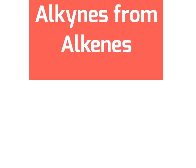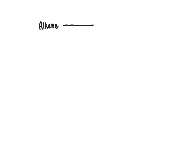Let's look at how to convert alkenes into alkyne functional groups. We'll start with any alkene molecule and do two reactions in a row. The first reaction is an addition reaction where we add across the carbon-carbon double bond either chlorine or bromine — Cl2 or Br2.